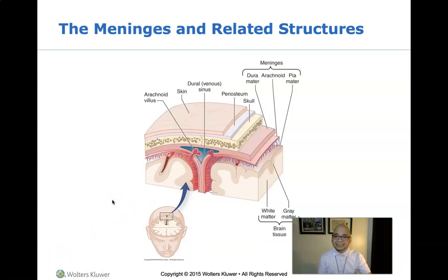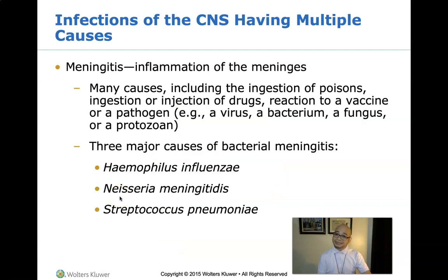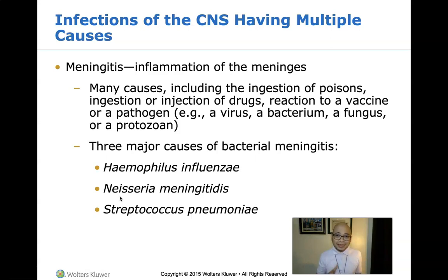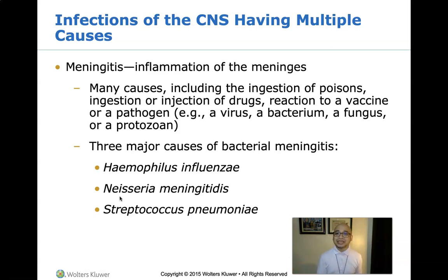The three major causes of bacterial meningitis are Haemophilus influenzae type B — which can be prevented by vaccination — Neisseria meningitidis, commonly known as meningococci, which can cause meningococcemia, and Streptococcus pneumoniae. These are the three major bacterial causes of meningitis.